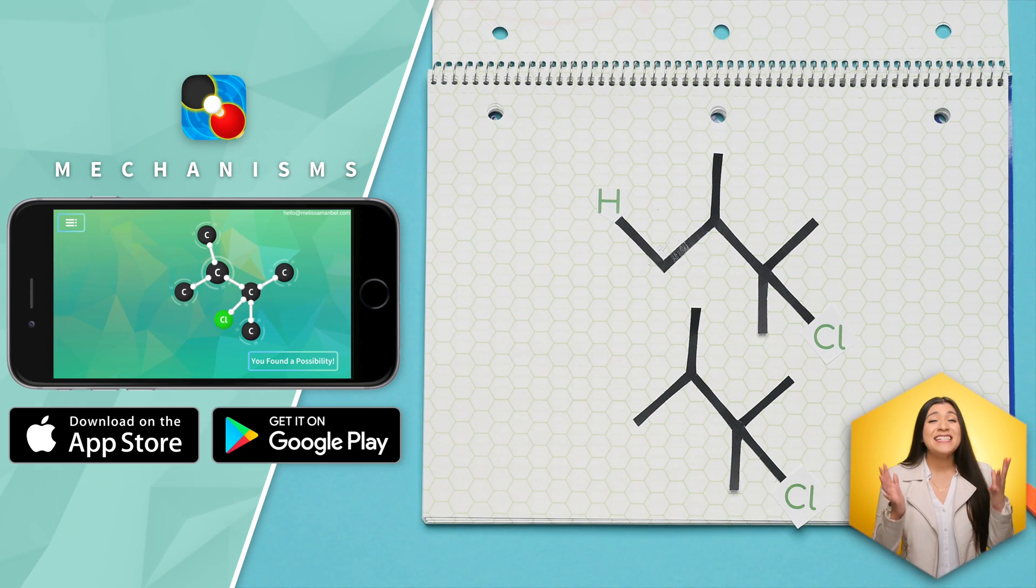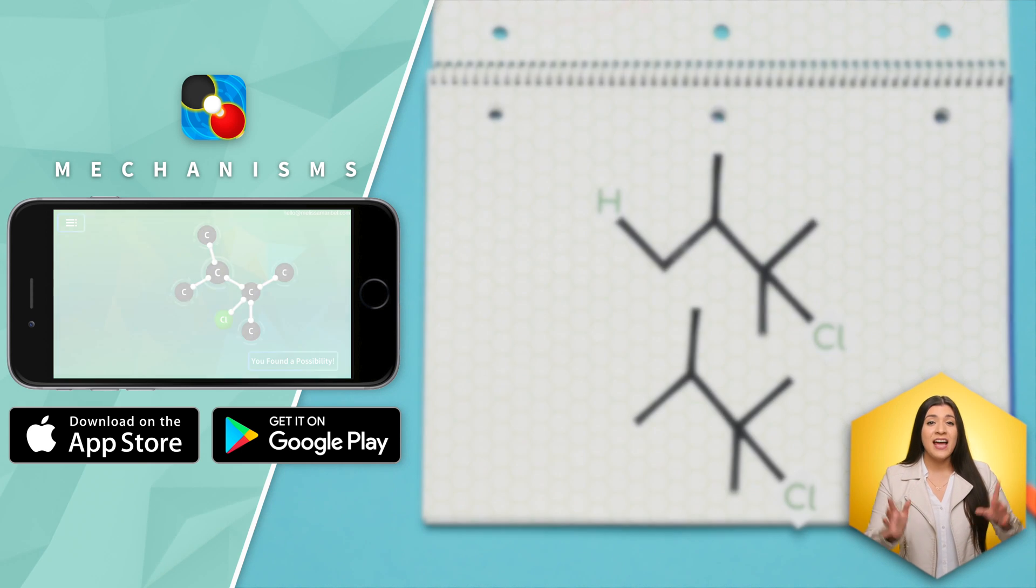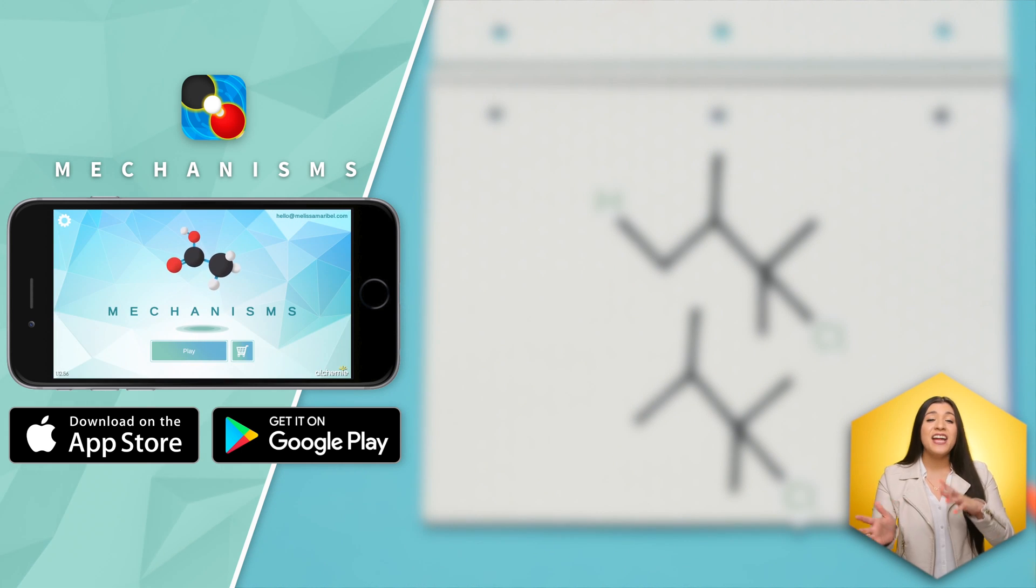If you need practice problems, check the links in the description. There you'll find a study guide on hydride shifts and alkyl shifts. And if you would like more help with hydrohalogenation, then click on this video.